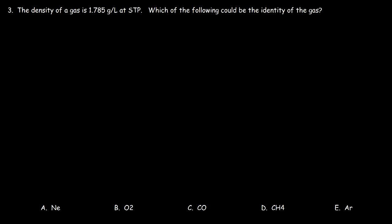Number 3. The density of a gas is 1.785 grams per liter at STP. Which of the following could be the identity of the gas? As in the case of problem 1, in order to identify the gas, we need to calculate its molar mass. So there's two ways in which we can do it.